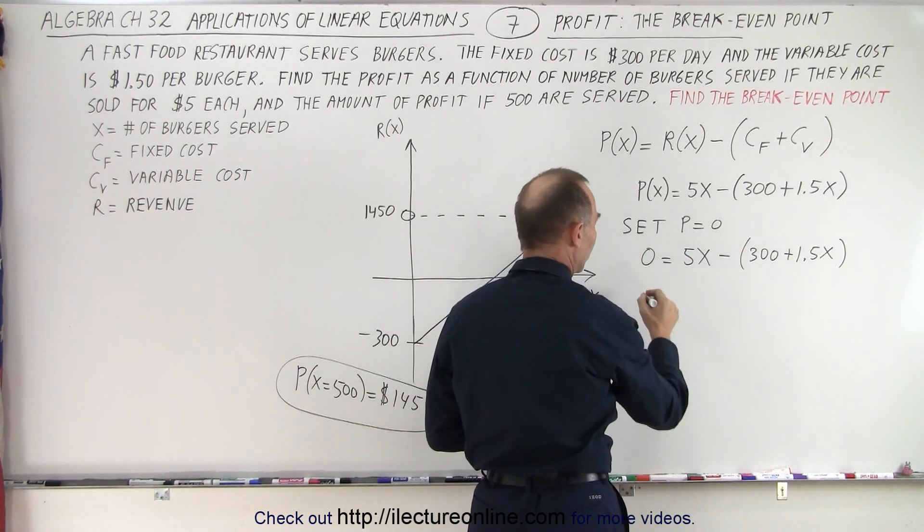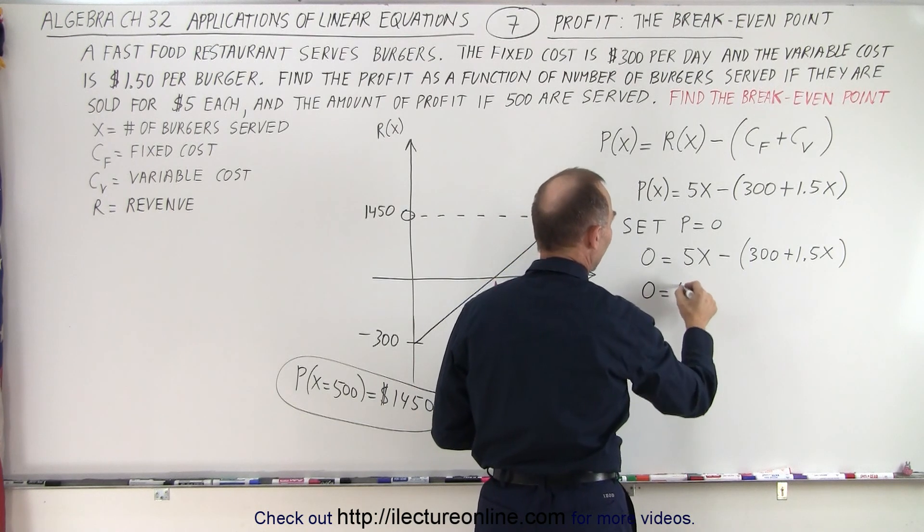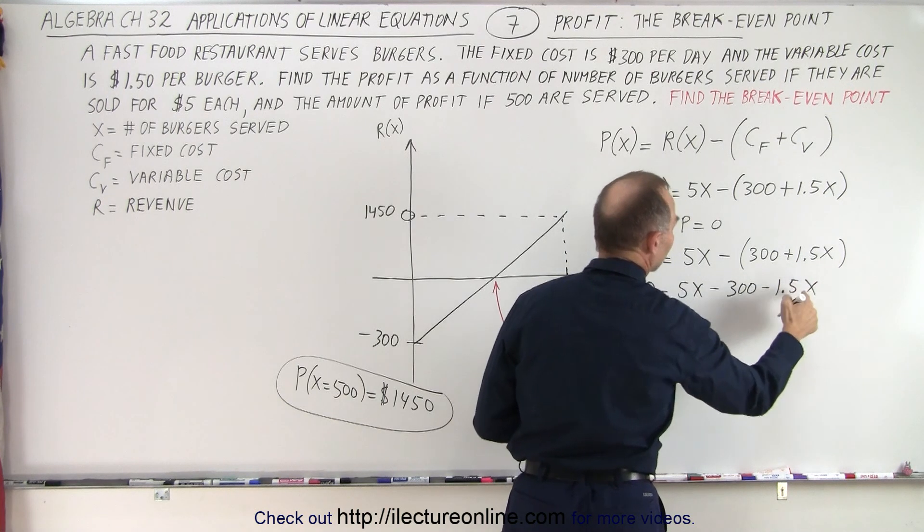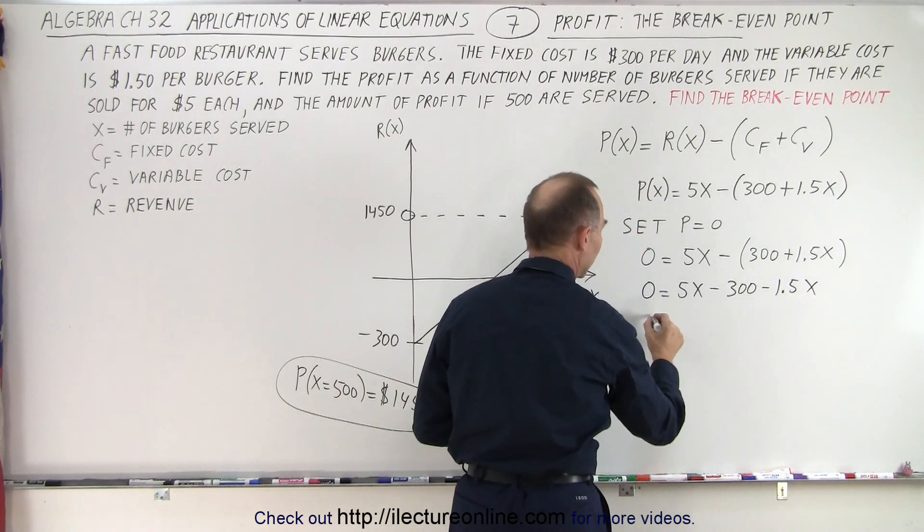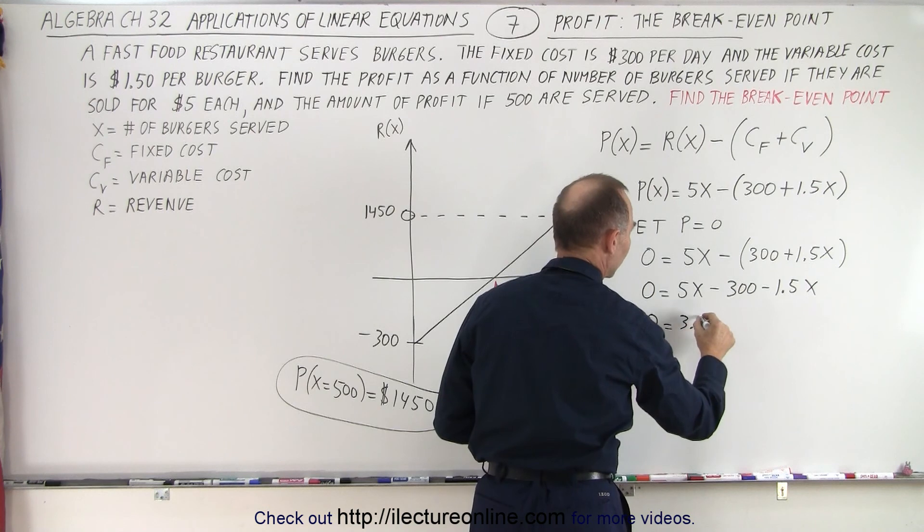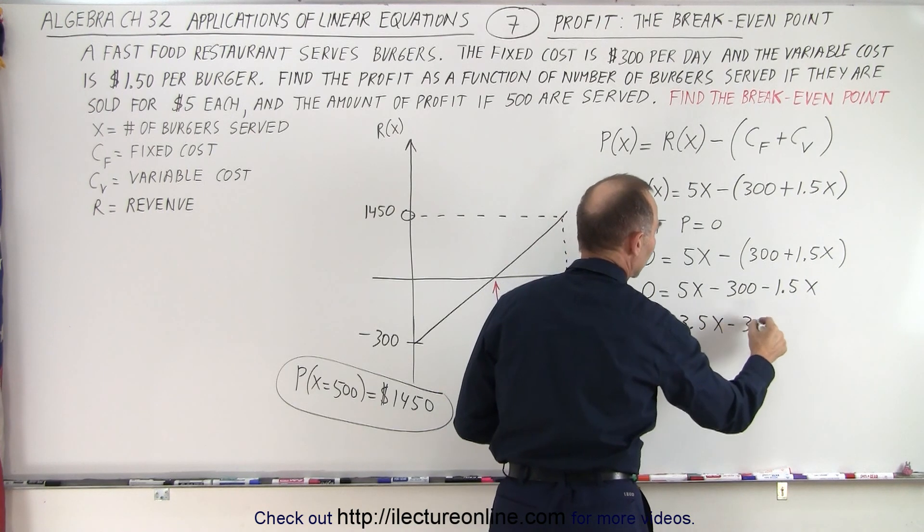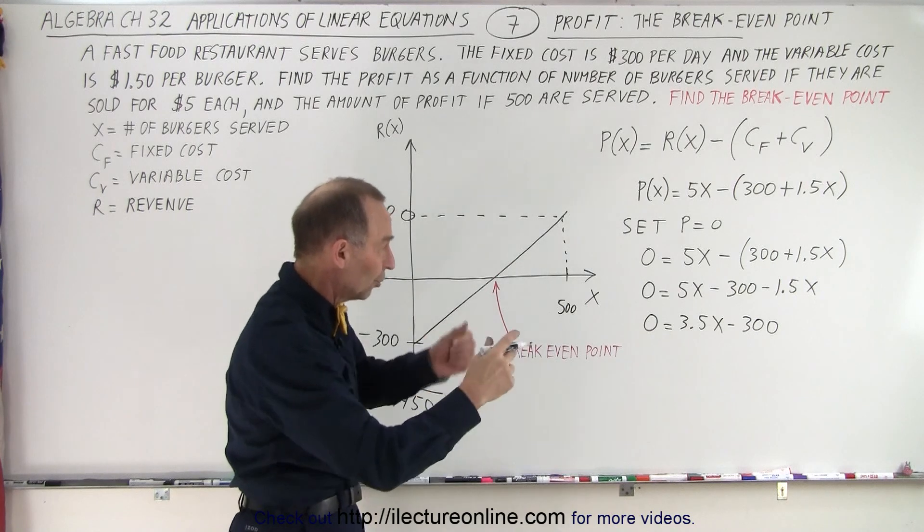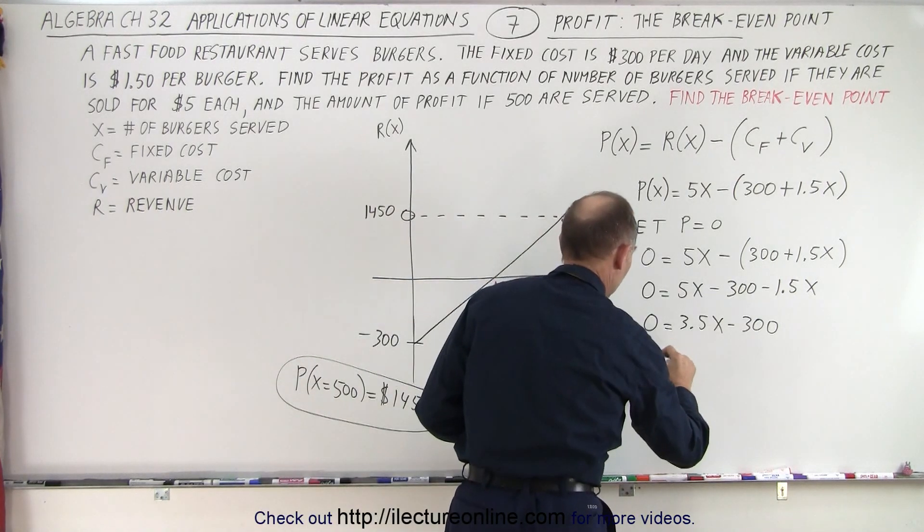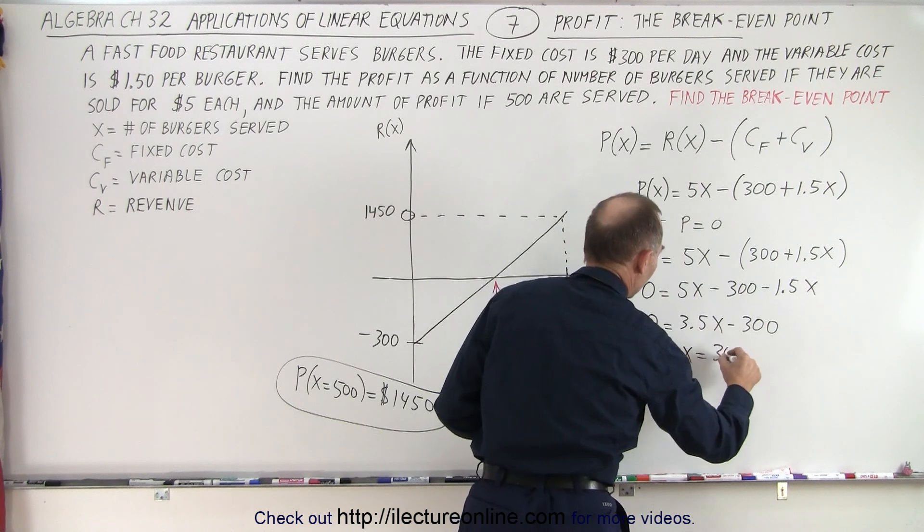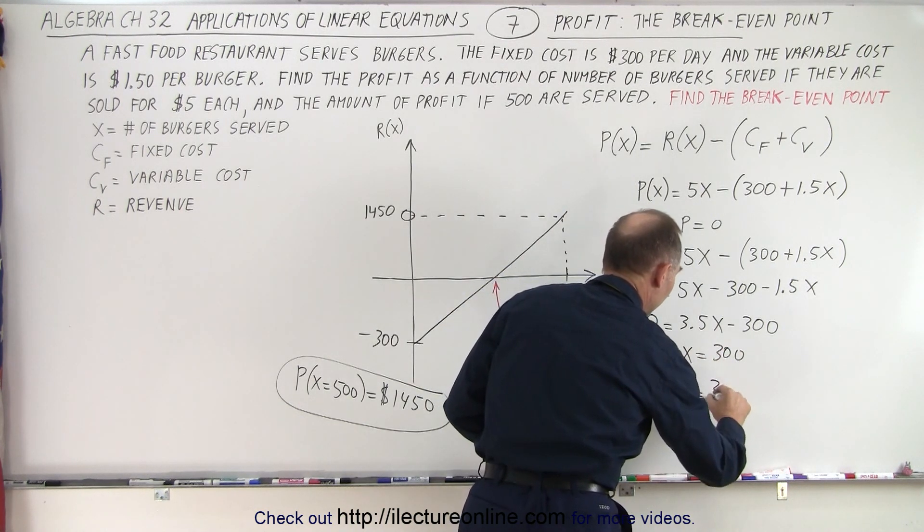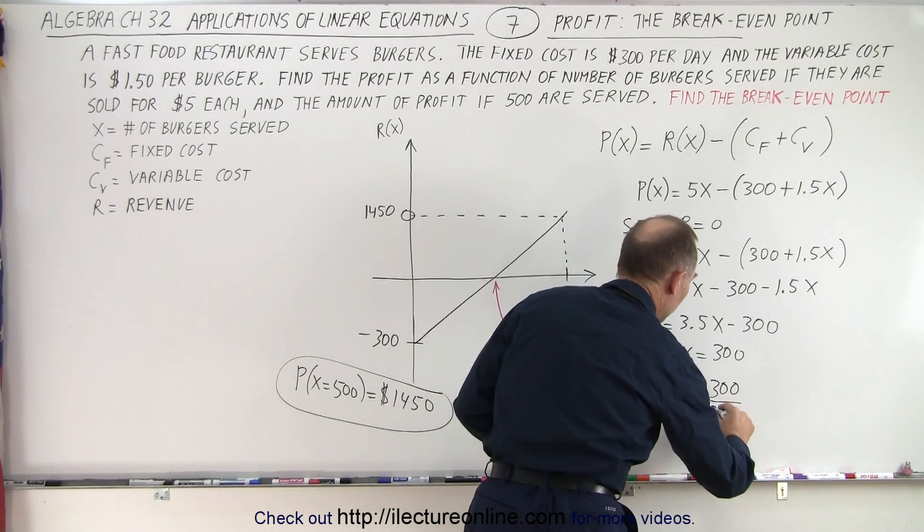So getting rid of parentheses we have zero is equal to 5x minus 300 minus 1.5x, and then combining like terms we get zero is equal to 3.5x minus 300. So now what we can do here is we can move the 300 to the other side, turn the equation around, so we end up with 3.5x is equal to 300, or dividing both sides by 3.5, x equals 300 divided by 3.5.